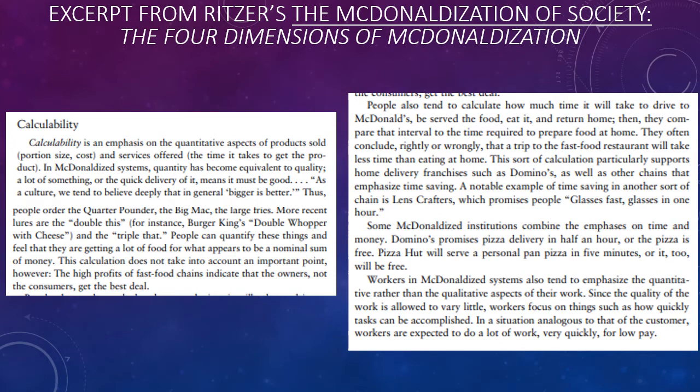The second dimension is calculability: 'Calculability is an emphasis on the quantitative aspects of products sold — the numerical aspects like portion size, cost, and the time it takes to get the product. In McDonaldized systems, quantity has become equivalent to quality; a lot of something, or the quick delivery of it, means it must be good. As a culture we tend to believe bigger is better. Thus people order the Quarter Pounder, the Big Mac, the Large Fry, the Double Whopper with Cheese. People can quantify these things and feel they are getting a lot of food for a nominal sum of money — though the high profits of fast food chains indicate that the owners, not the consumers, get the best deal.'